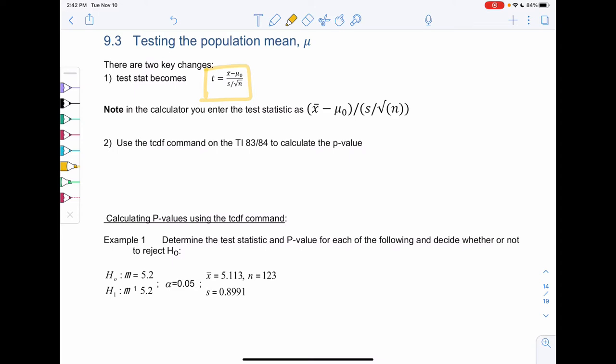It'll be x-bar minus mu zero over s over root n. In the calculator, you want to make sure you put parentheses on both the numerator and the denominator. Instead of using normal CDF, since we have a t-score, there's this new function called tCDF. And the only thing different is you'll still do lower and upper, but you also have to tell tCDF the degrees of freedom.